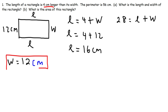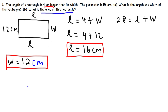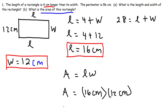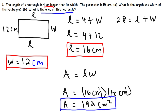So now we have the width and the length of the rectangle — that's how you find the length and width when given the perimeter. The last thing we need to do is calculate the area. Area equals length times width, so 16 centimeters times 12 centimeters. 16 times 12 is 192, and centimeters times centimeters gives us centimeters squared. The area of this rectangle is 192 square centimeters.